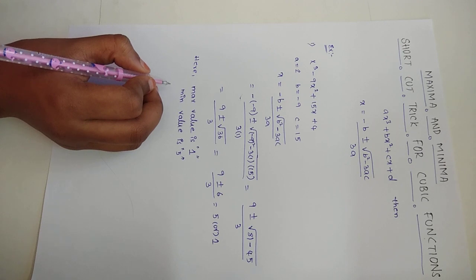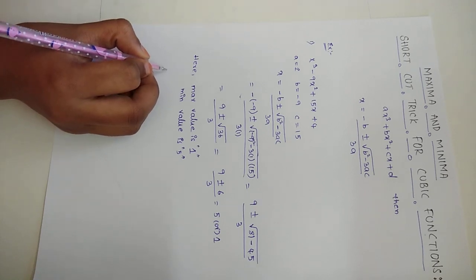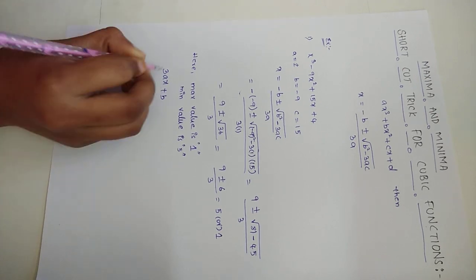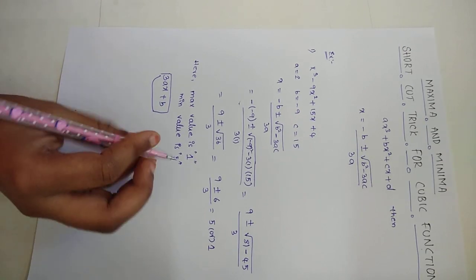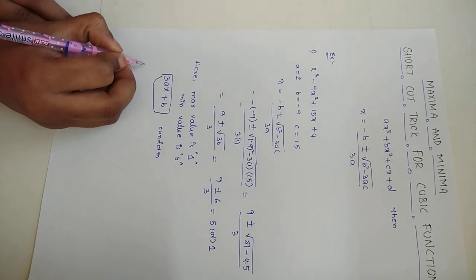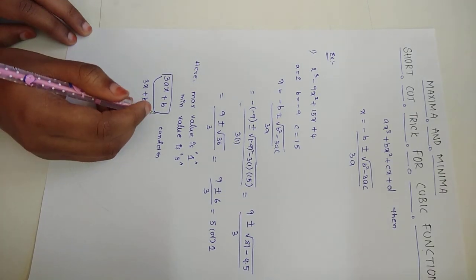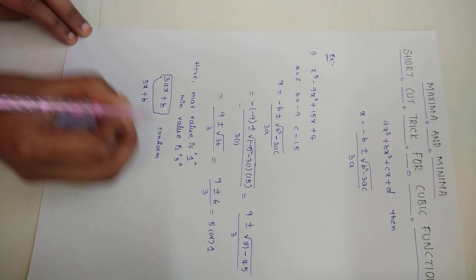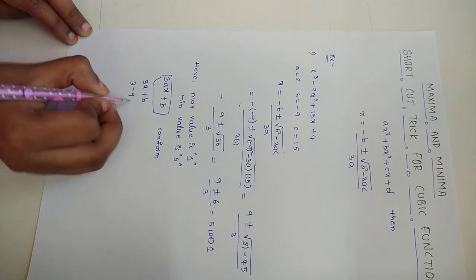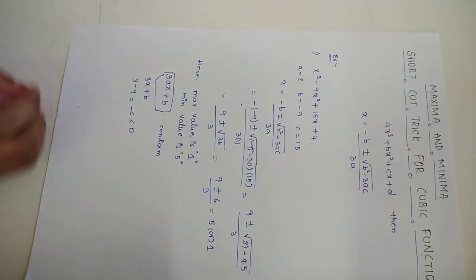To confirm whether the answer is correct, I am using the second derivative formula 3ax + b. Substituting x = 1: 3(1) + (−9) = 3 − 9 = −6, which is less than 0. Since the second derivative is negative, it confirms that x = 1 is a maximum value.